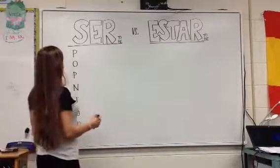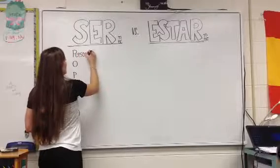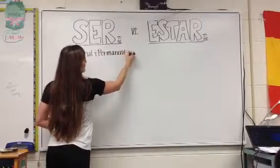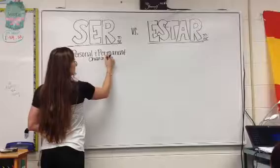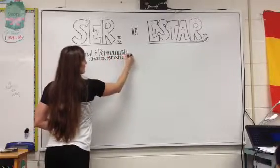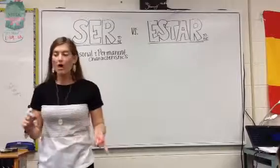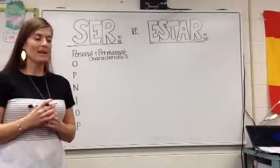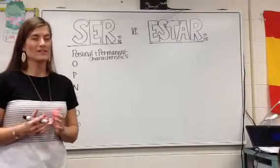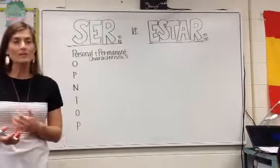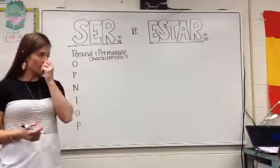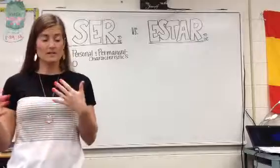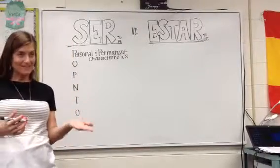The first letter P stands for personal and permanent characteristics. I can say 'I am a teacher,' 'I am a girl,' 'you are a student,' 'he is blonde' — it's a characteristic. Maybe that person changes their hair color, but it's still considered a characteristic of the person. It doesn't have to be personal AND permanent; it can be one or the other. For example, 'the house is green' — la casa es verde.